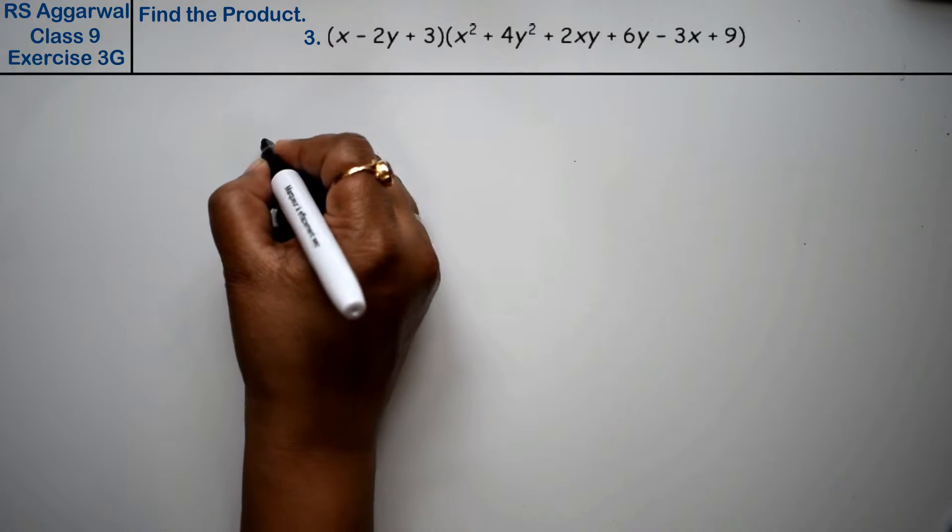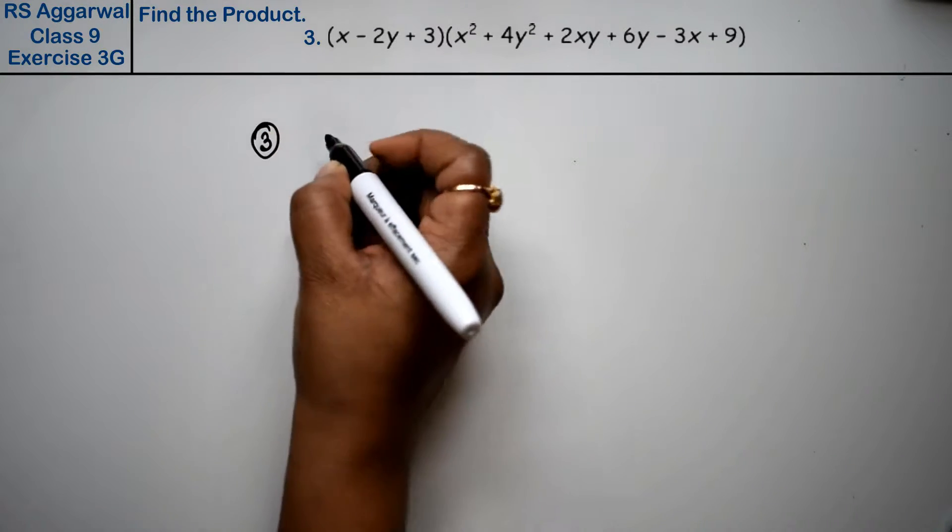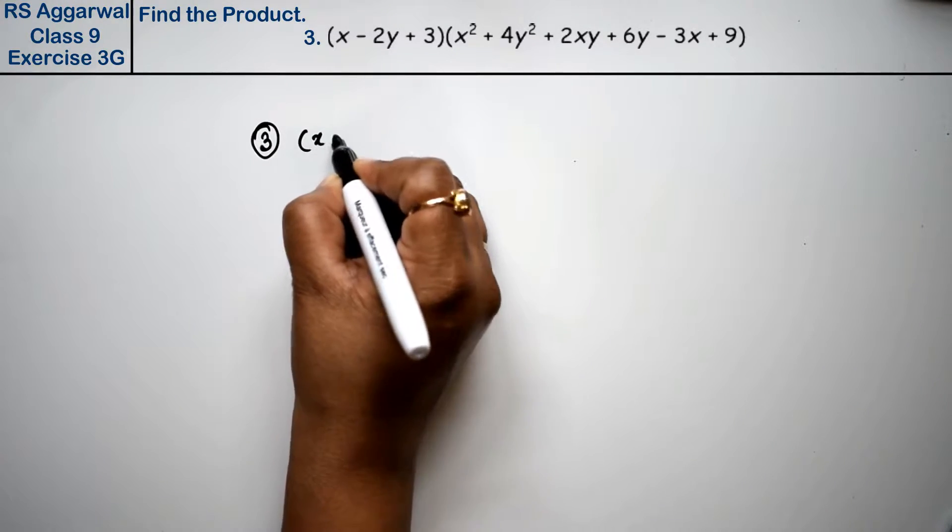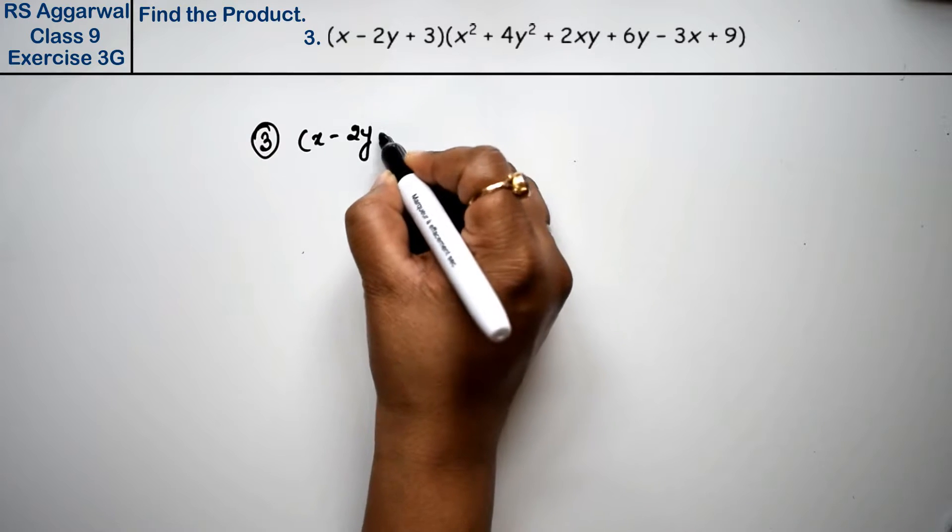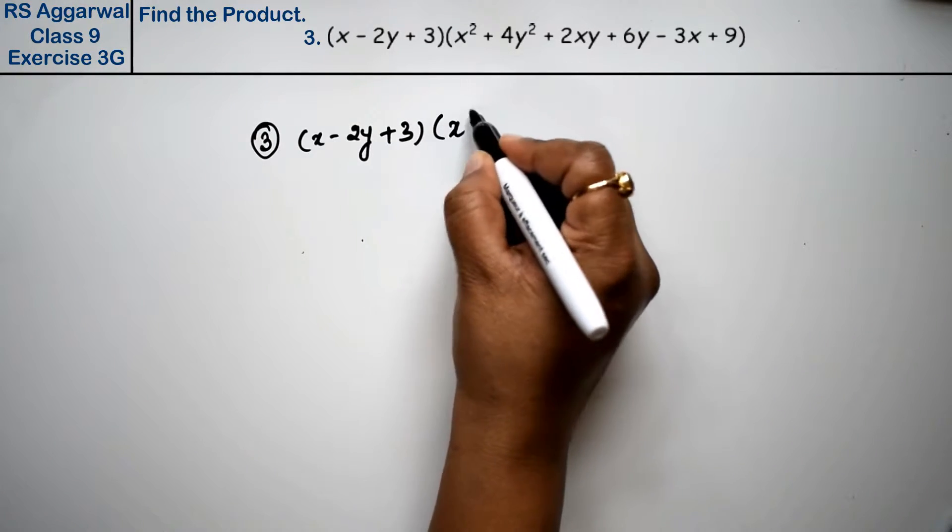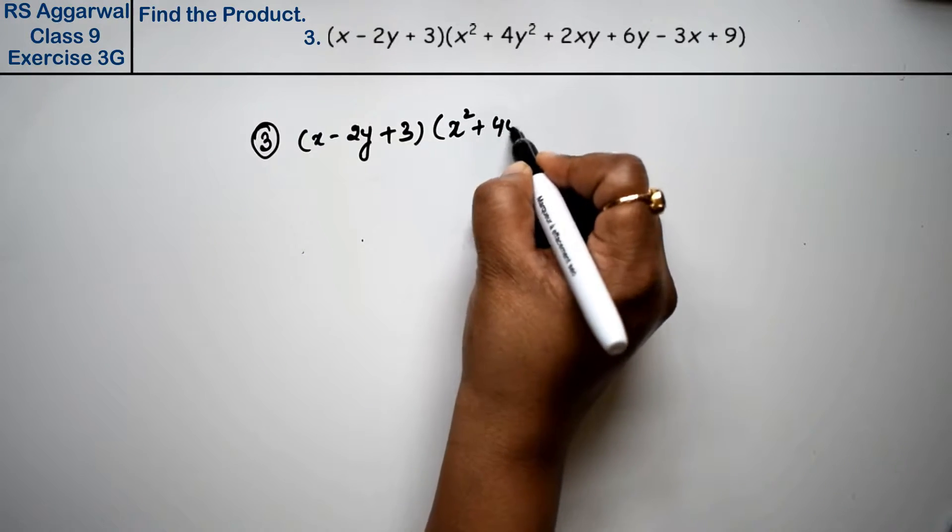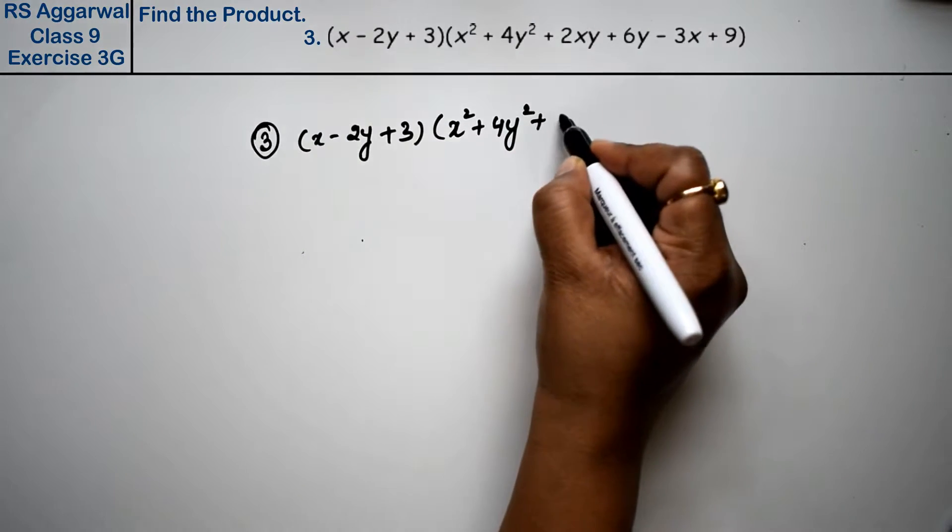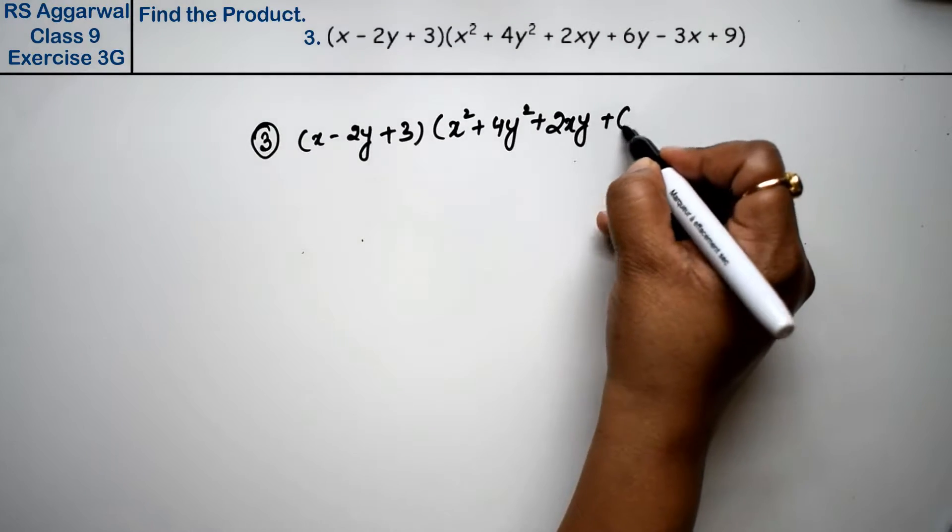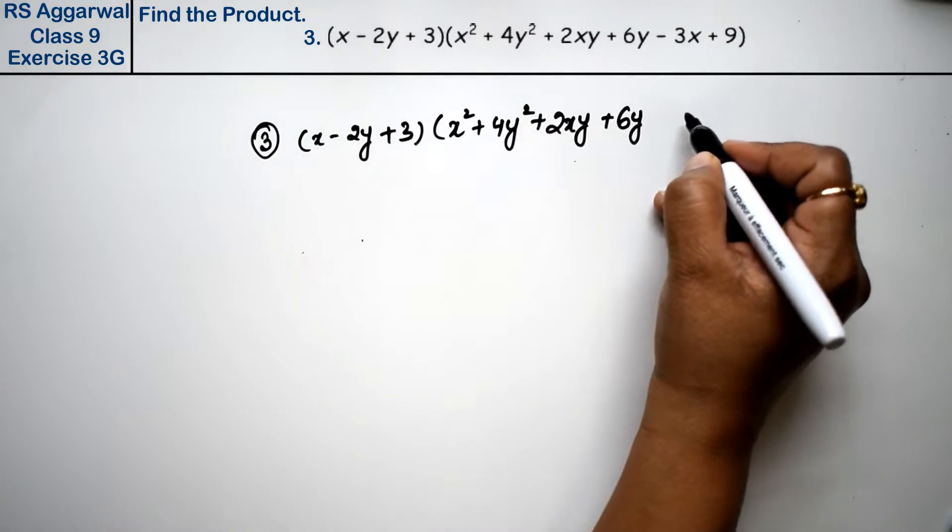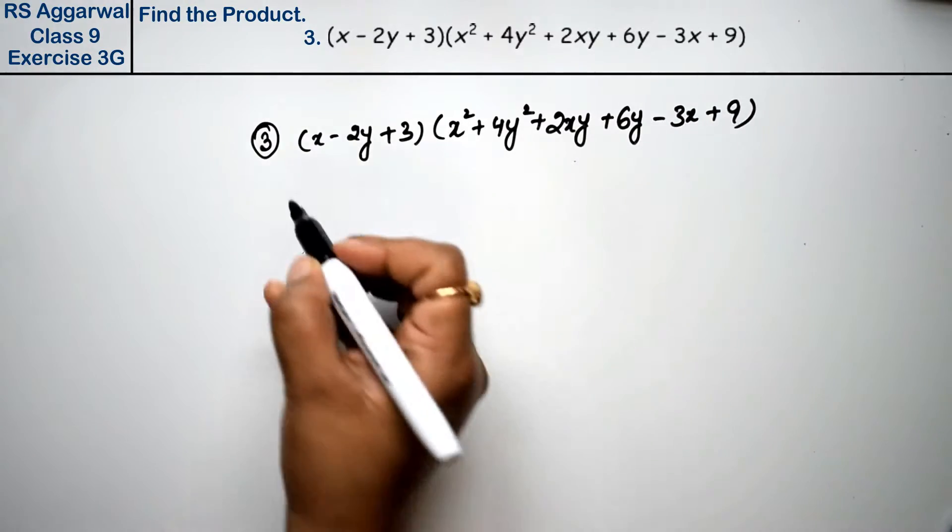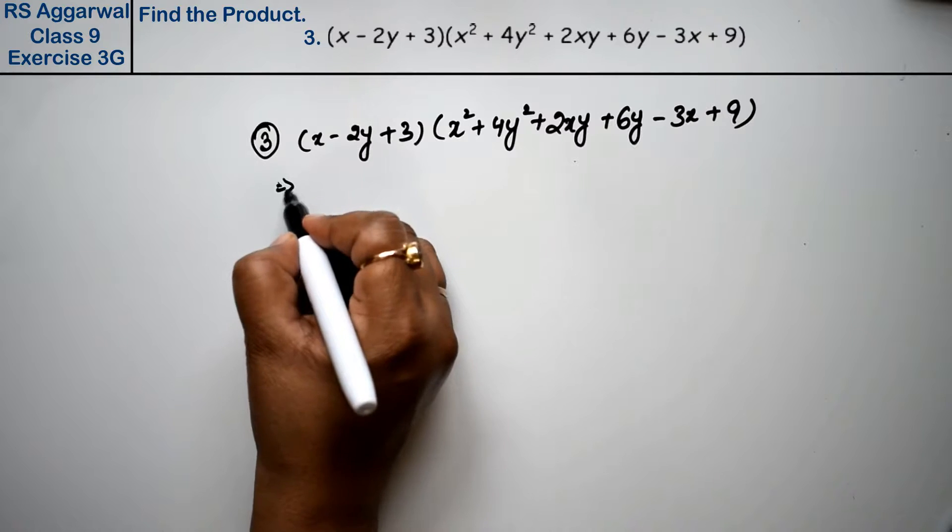Let's do question number three of exercise 3G, that is factorization of polynomial. Question number three is (x - 2y + 3)(x² + 4y² + 2xy + 6y - 3x + 9).